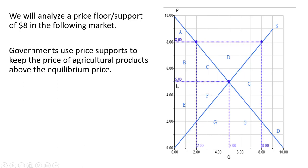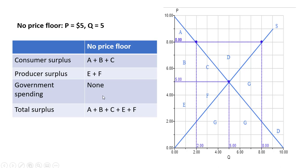So in this diagram here the equilibrium price is $5, equilibrium quantity is 5, and we're going to have a price floor set by the government of $8. So let's look at the welfare implications.